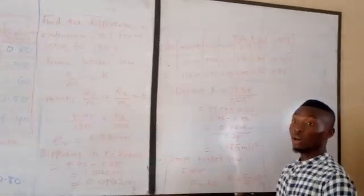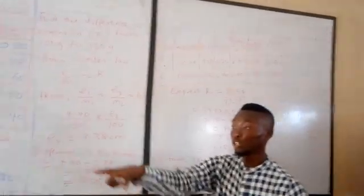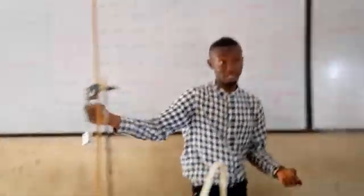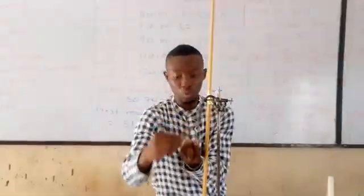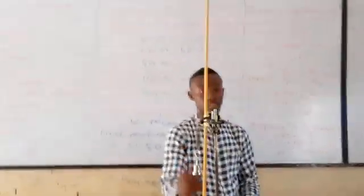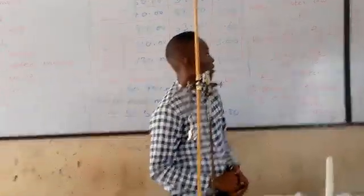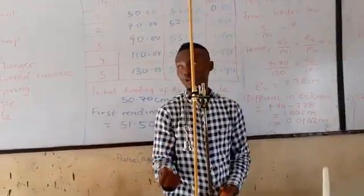Then, at 110 grams, that means we are going to remove one of the 20 grams masses. When we remove one, this will be at 110. Then we set it to vertical oscillations. And we record our time for 10 complete oscillations.